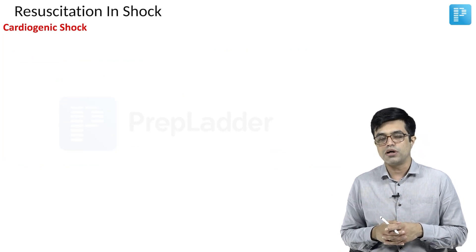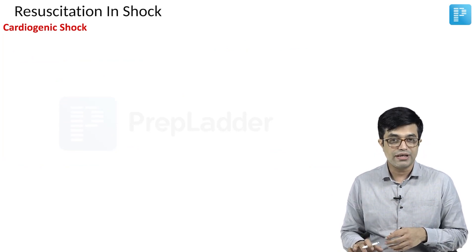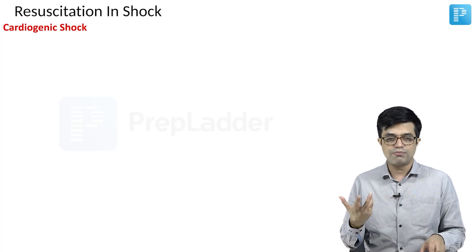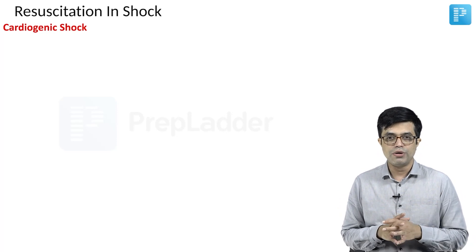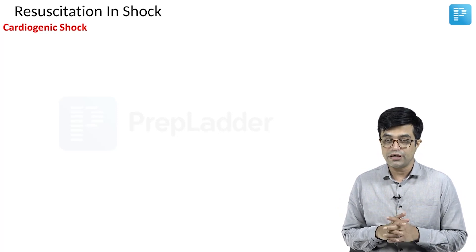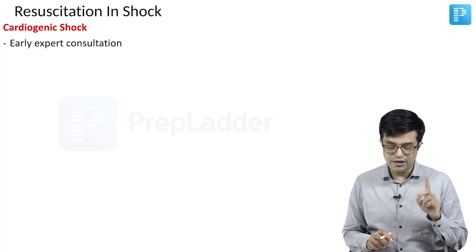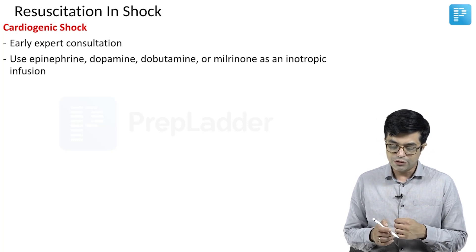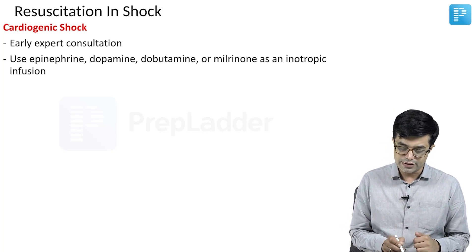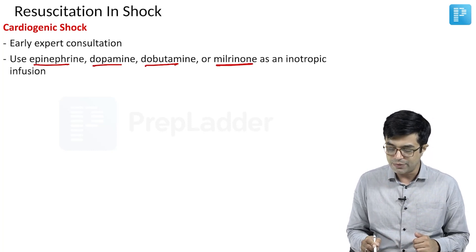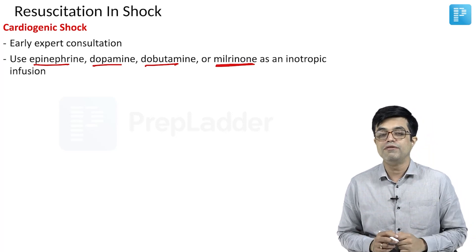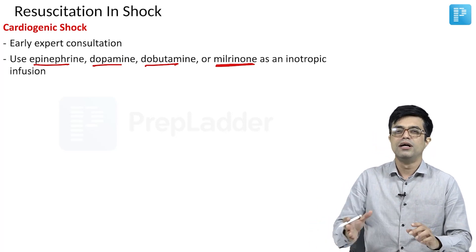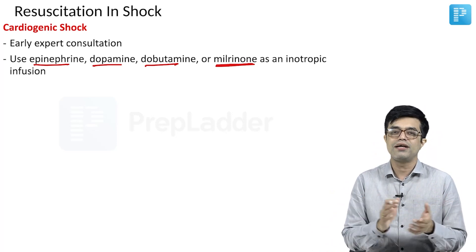Let's talk about cardiogenic shock. Cardiogenic shock management is tricky. If you give too much fluid, it is going to cause pulmonary edema; if you don't give adequate fluids, the preload may not be sufficient. Cardiogenic shock patients need early expert consultation, preferably a pediatric cardiologist. You need to use a combination of drugs ranging from epinephrine, dopamine, dobutamine, or milrinone. But dobutamine alone will not be used — this is a point to remember, and it is clearly mentioned in other textbooks.